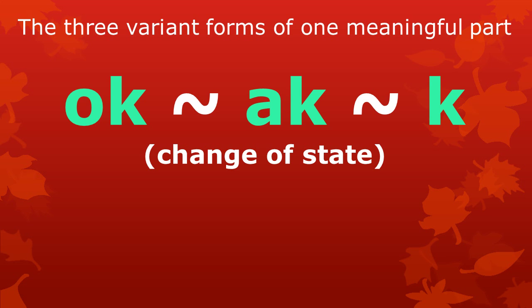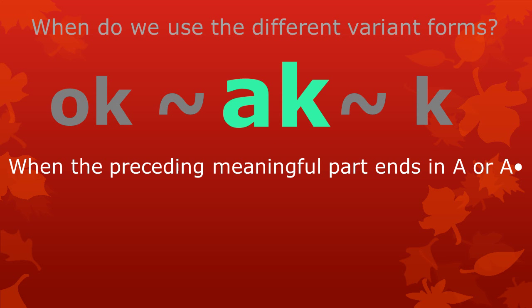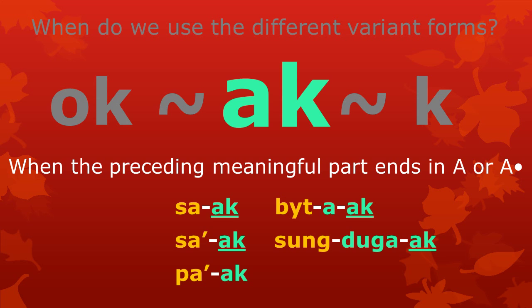I will now answer when to use the different variant forms of this meaningful part. We use the variant form Ak when the preceding meaningful part ends in A or A-raka. For example, in the words Saak, Btaak, Saak, Sundugak, and Paak.